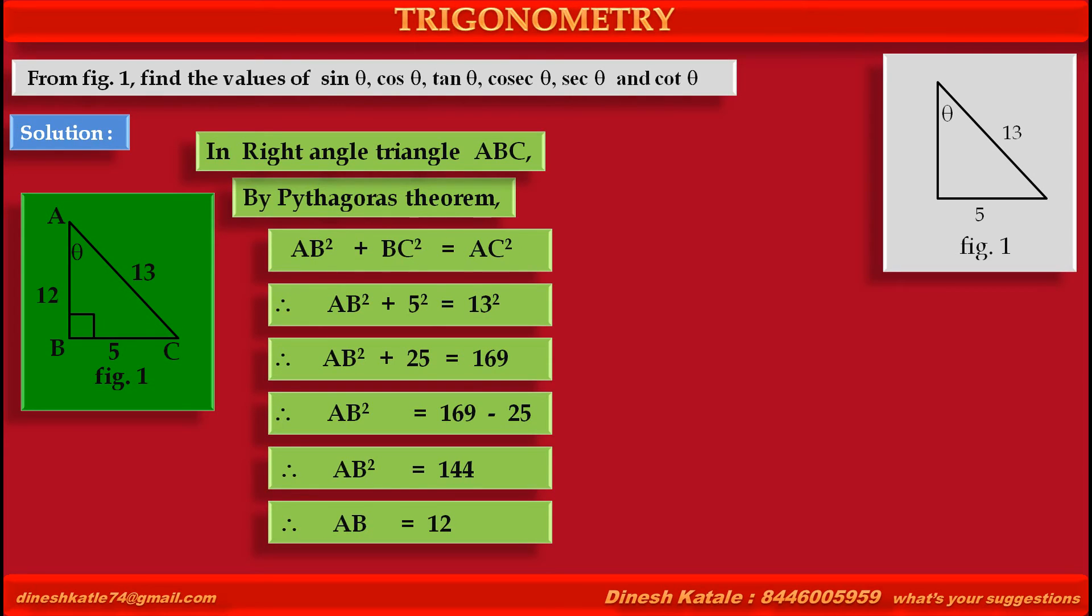Now, we have all 3 sides of triangle ABC. So, we can find required trigonometric ratios. Sine theta is equal to opposite side of theta BC upon adjacent side AC, is equal to 5 value of BC upon 13 value of AC.